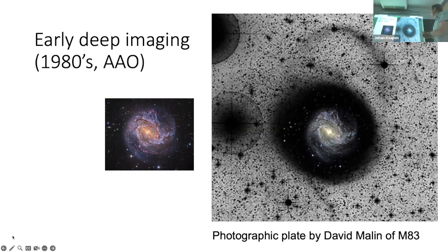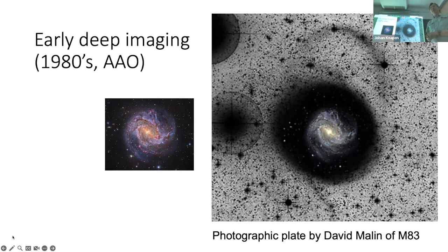Malin was the expert. He produced these images in the 80s. Malin actually wasn't really an astronomer — he was more like a chemist and an engineer. But he produced these images, and then for a number of decades that's basically where the field remained. As CCDs arrived, the field of view was very small in the 80s and 90s. This was basically the state of the field of deep optical imaging of galaxies for a number of decades, but nowadays we can move on.